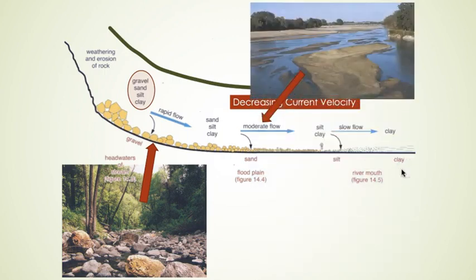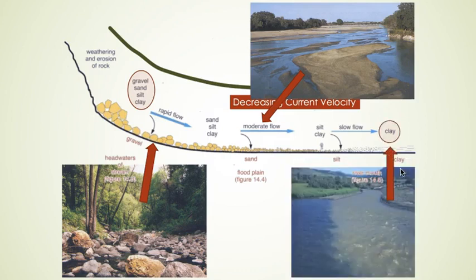Poorly sorted sediment will be deposited nearest the source, where streams are flowing down the steepest slopes and have the most energy. Moderately well-sorted sediment is generally deposited as a stream slows, while the most well-sorted sediment will be deposited near the mouth of a stream, where the water is only capable of transporting and depositing fine sands and silt.